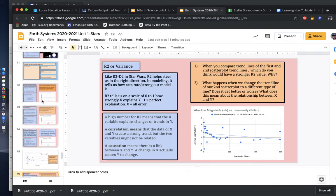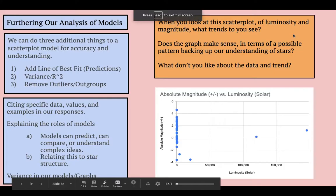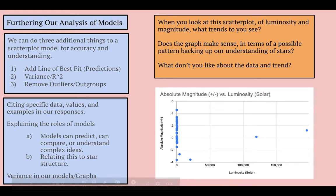So let's get started. We learned last week and we're practicing this week how to make models for trend lines. Now there's three additional things that we can do today after we're finished thinking about scatterplot modeling for accuracy and understanding relationships. We can add lines of best fit for predictions, we can talk about variance of our data, and we can talk about removing outliers or outgroups.